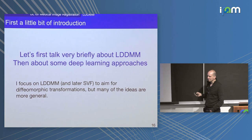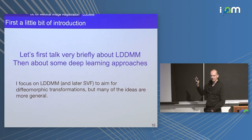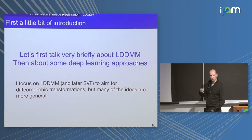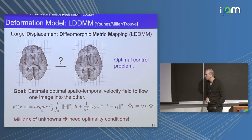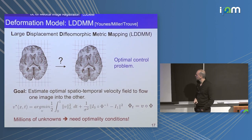Let me briefly introduce a model called LDDMM — Large Displacement Diffeomorphic Metric Mapping. It's about 20 to 30 years old. It's a nice model because it looks at registration from an optimal control point of view.